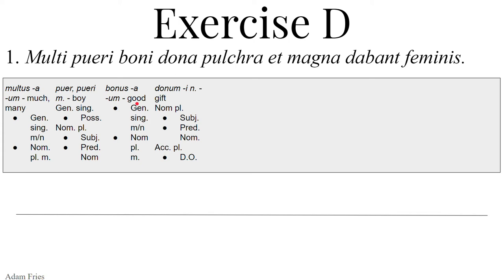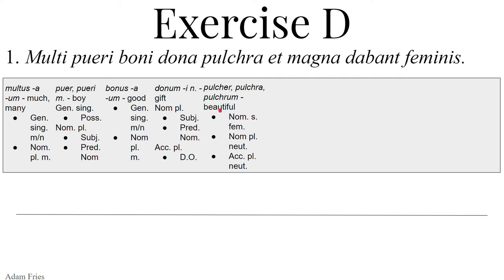Dona could either be the subject or the predicate nominative, or the accusative direct object. The adjective pulcher, pokra, pokrum — beautiful, noble, or fine. It could likewise be nominative singular feminine, nominative plural neuter, or accusative plural neuter. It could agree with dona, modifying the noun dona. Et — et is a conjunction meaning and. Magna — so we're linking pokra et magna, this adjective and this adjective. They don't have to be the same, but they could be. Magnus a um — large, great, or big. It could also be nominative singular feminine, nominative plural neuter, or accusative plural neuter. So we're going to have to make some choices when we get to the end.